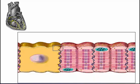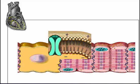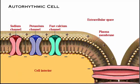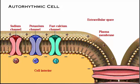Let's explore the structure of an auto-rhythmic cell. In this diagram, we see the structures that are crucial for generating an action potential. Embedded in the plasma membrane, we see several protein channels that allow ions to move into or out of the cell. Sodium channels and fast calcium channels allow sodium and calcium to enter the cell, whereas potassium channels allow potassium to leave the cell. The movement of ions affects the membrane potential — the voltage across the membrane.